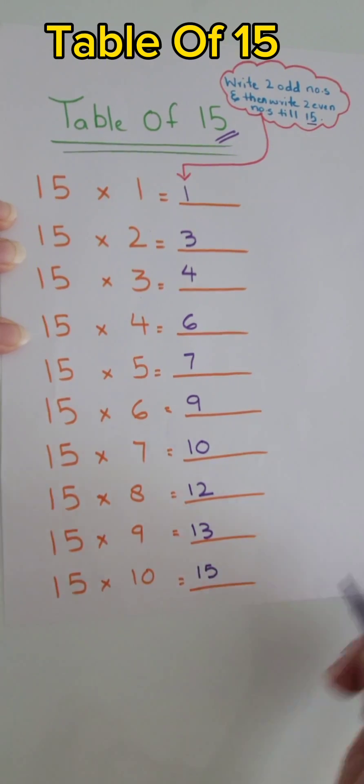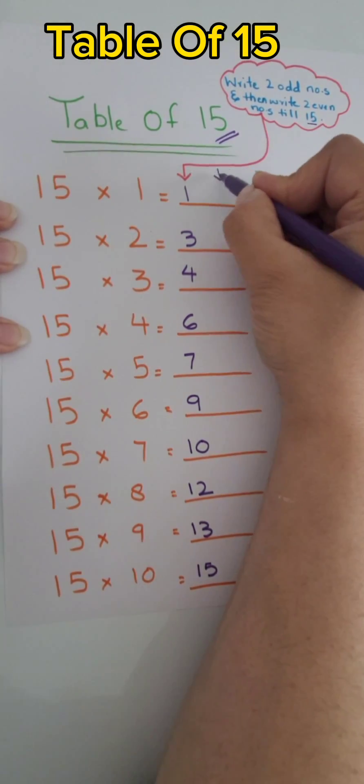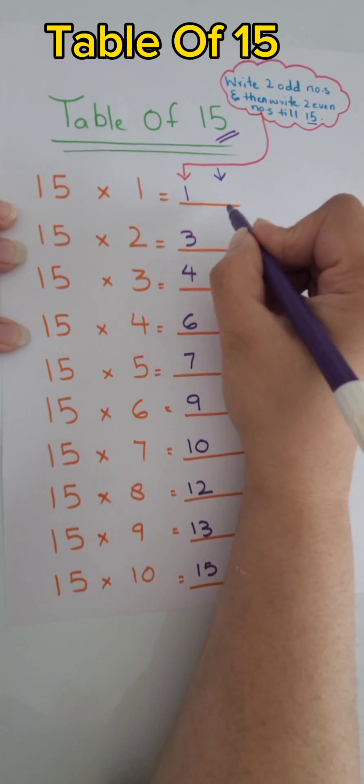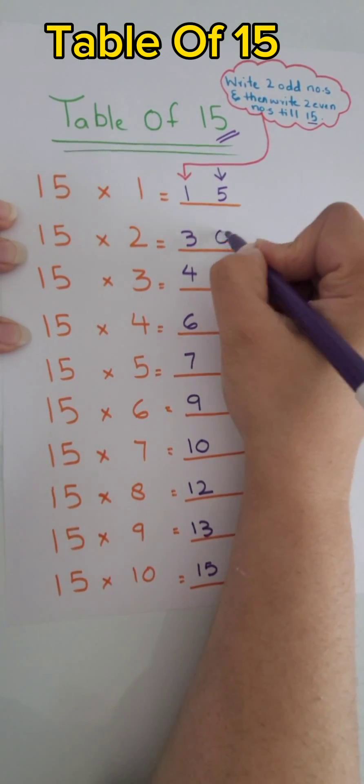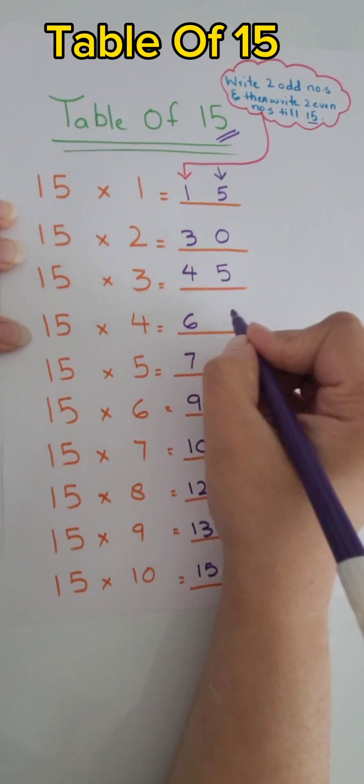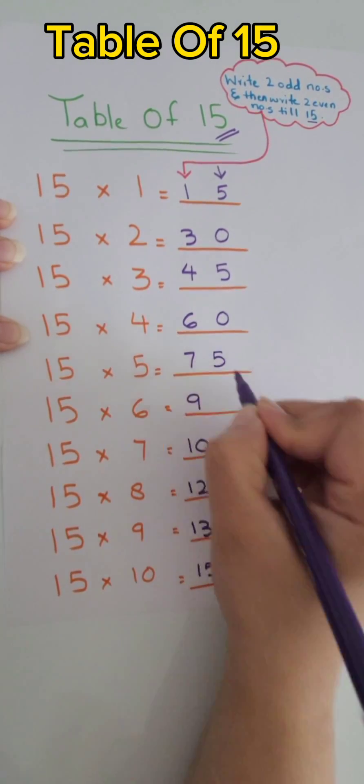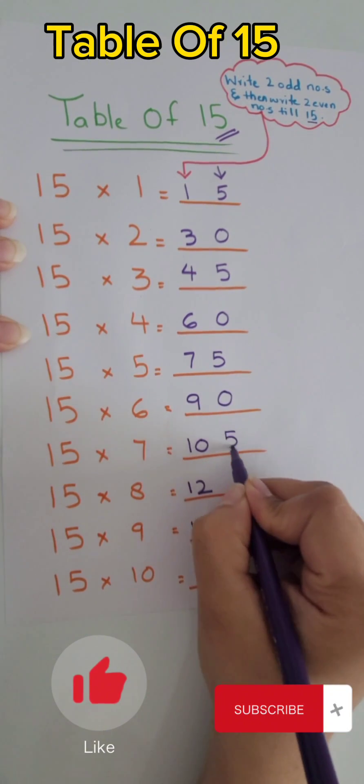Now we're going to start from the top and write 5 and 0 alternatively. So here we start 5, 0, 5, 0, 5, 0 and so on.